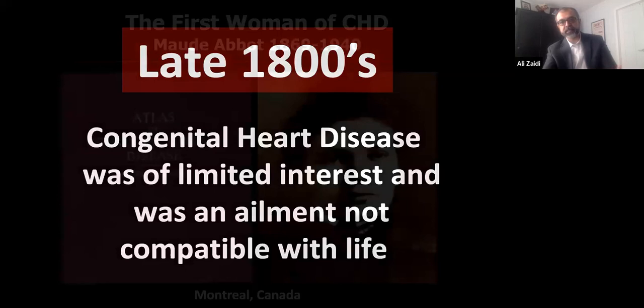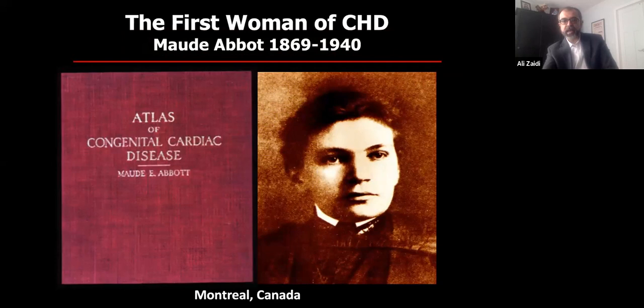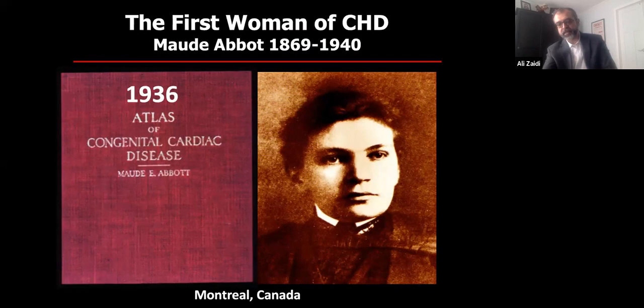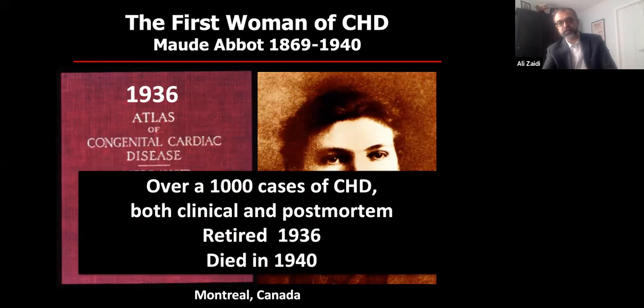In the 1930s in Montreal, Canada, Maura Abbott was the first woman of congenital heart disease — women have played a tremendous role in this field. In 1936 she wrote The Atlas of Congenital Cardiac Disease, a series of a thousand autopsy specimens, all post-mortem. When this book came out she was told she couldn't practice as a pediatric cardiologist and was asked to retire. She retired and died four years later.